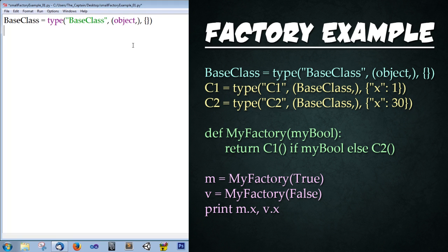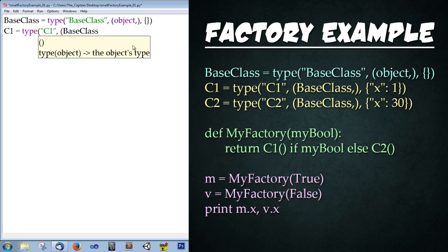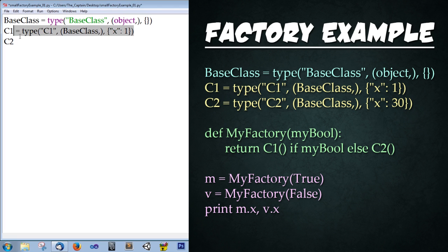Now we're going to create the subclasses. C1 = type('C1', (BaseClass,), {'x': 1}). And then C2 is pretty much the exact same — copy and paste that line, and assign the x value to 30, just so we know they're different, and change the second name to C2.